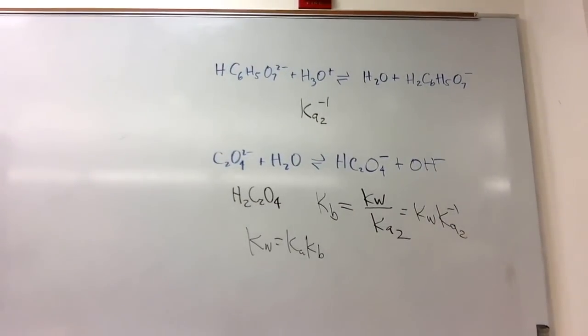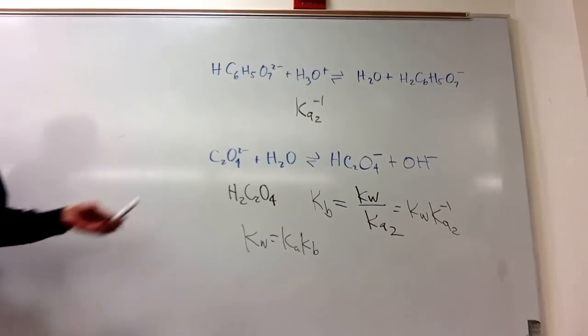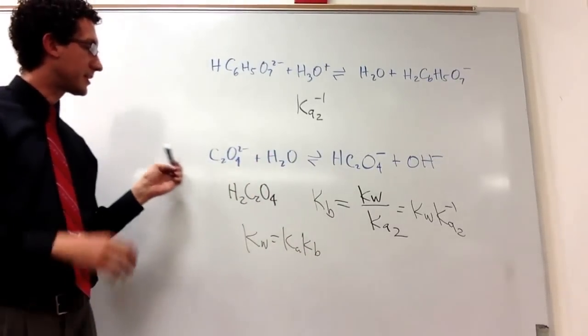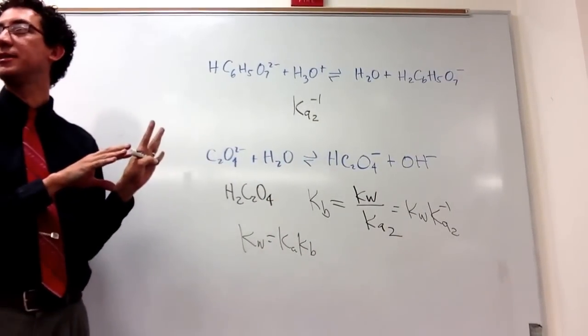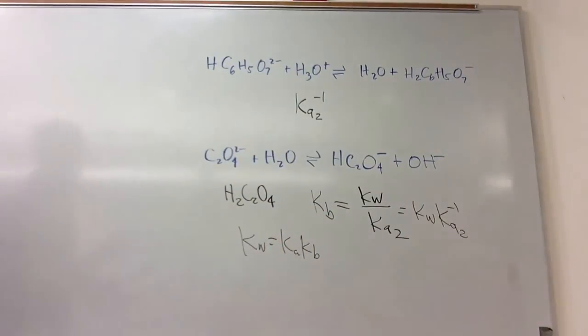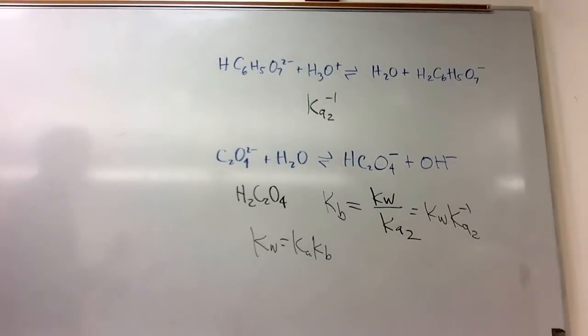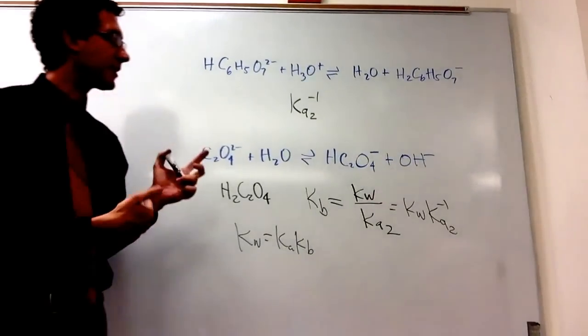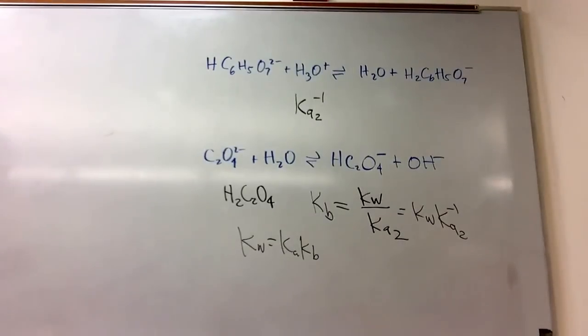And we use that formula any time there's conjugates. And here, you know, we're talking about conjugates because we're going in a base reaction. So, the conjugate was for the acid to be losing its second proton. But in this case, the base is picking up its first proton. So, it's the reverse of the KA2, but it's also a base equation.